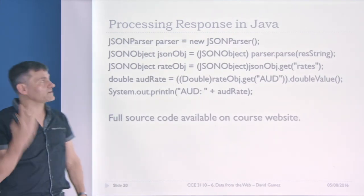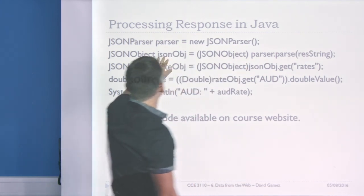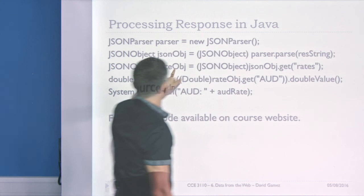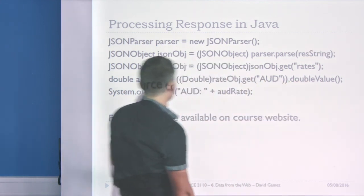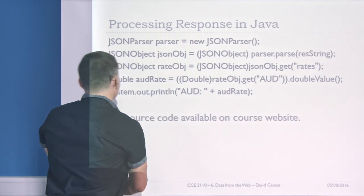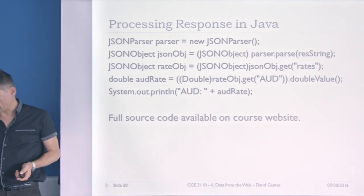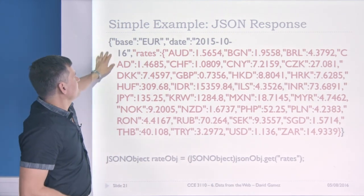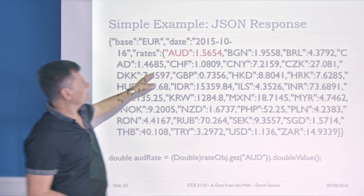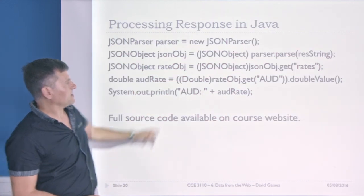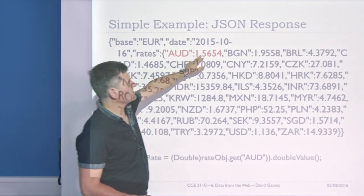JSON Simple makes it very easy to process a JSON string within Java. You create a new parser, parse the JSON string to create a JSON object, then call get('rates') to get all the rates, and finally extract the AUD object and get its double value to obtain the Australian dollar exchange rate. Your code may not be exactly the same but would be similar, and there are tutorials on JSON Simple if you need them.